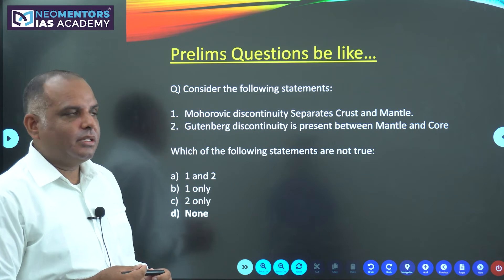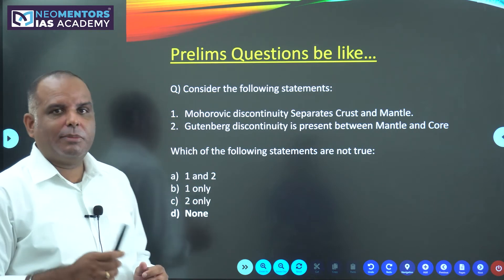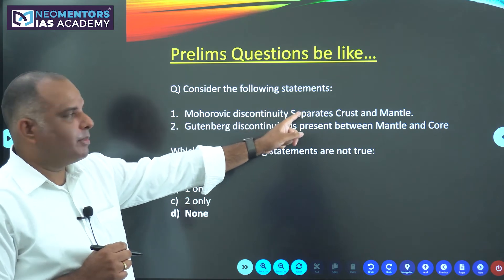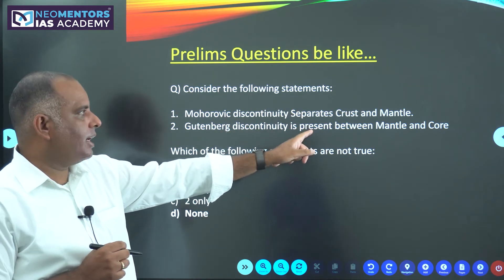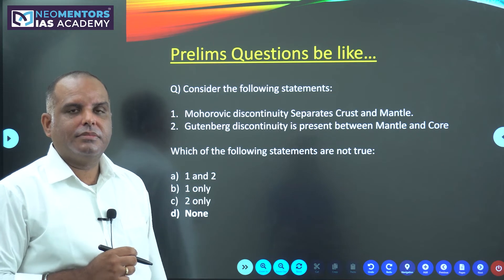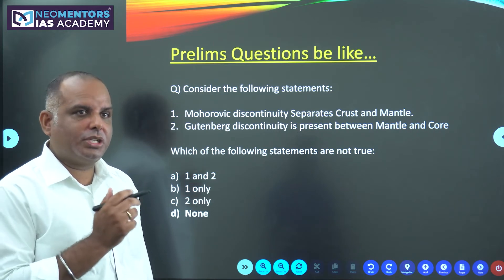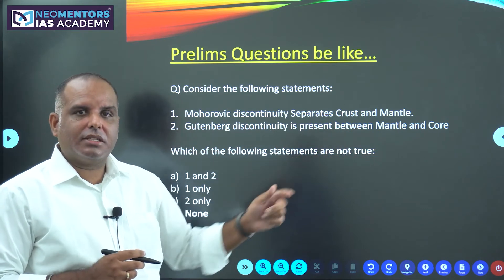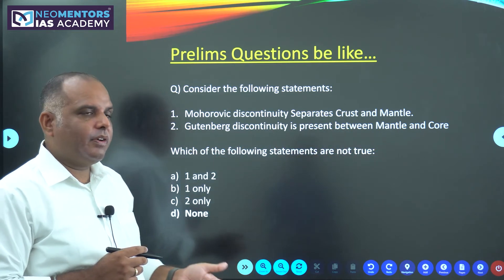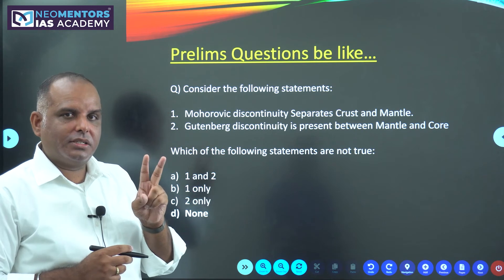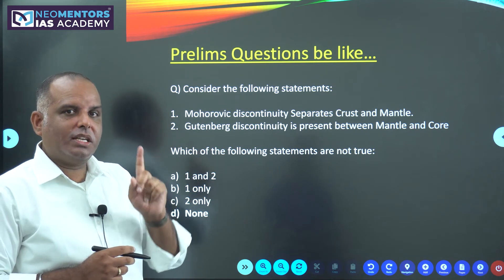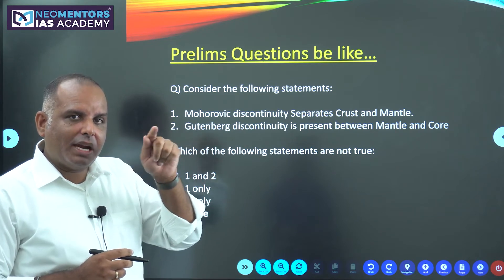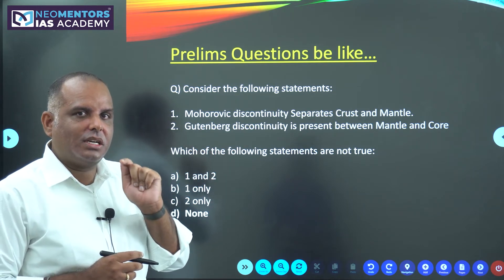Now let's discuss prelims questions on this topic. Consider the following statements: Mohorovičić discontinuity separates crust and mantle — this is a true statement. Gutenberg discontinuity is present between mantle and core — this is also a true statement. We discussed two discontinuities in the static model: Mohorovičić discontinuity between crust and mantle, and Gutenberg discontinuity between mantle and core.